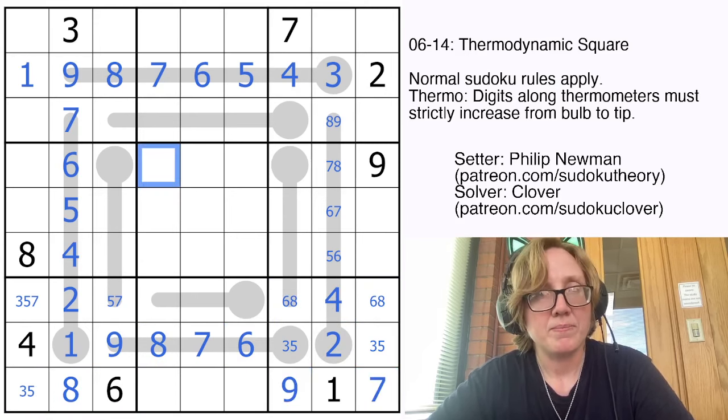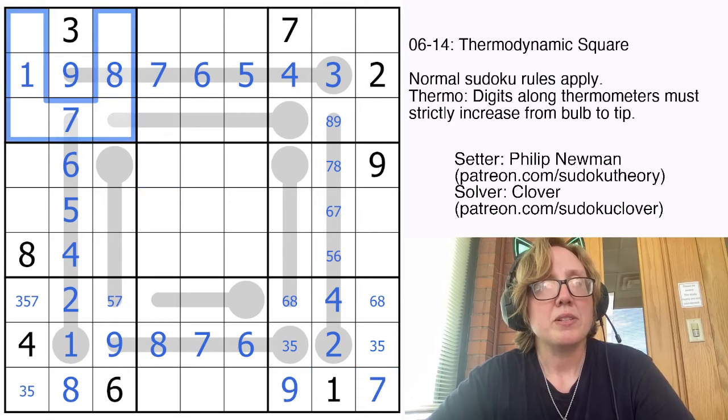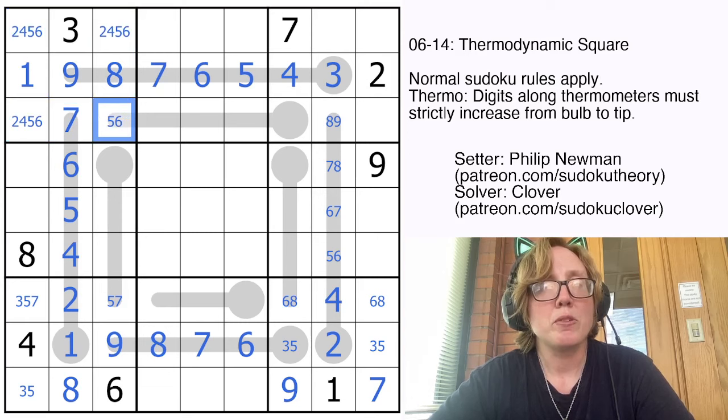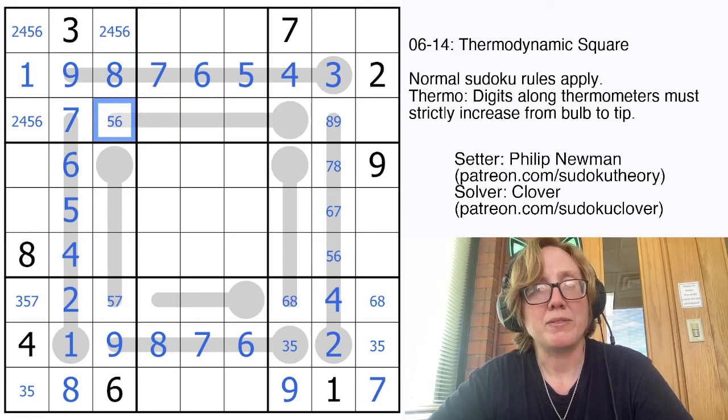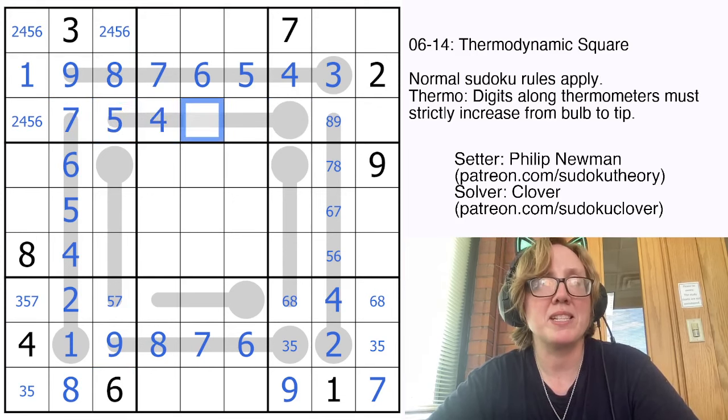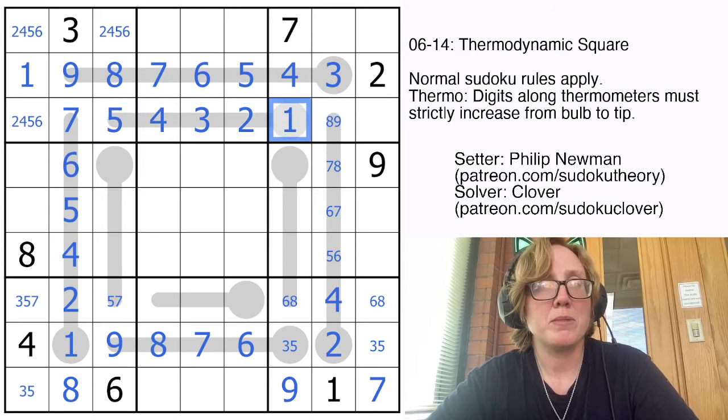This now can't be a 7. These cells are going to contain 2, 4, 5, and 6. This can't be a 2 or 4 because this thermometer is fairly lengthy. We can't have a 2 or 4 on the end of a length 5 thermometer. Actually, we can't have a 6 either because there's a 6 in the column. So that's going to be a 5, which will make the whole thermometer minimal.